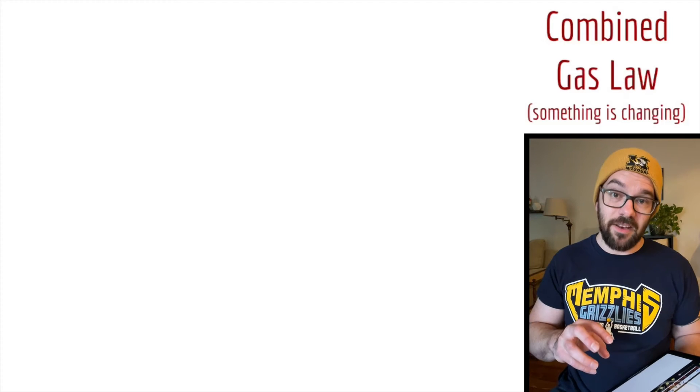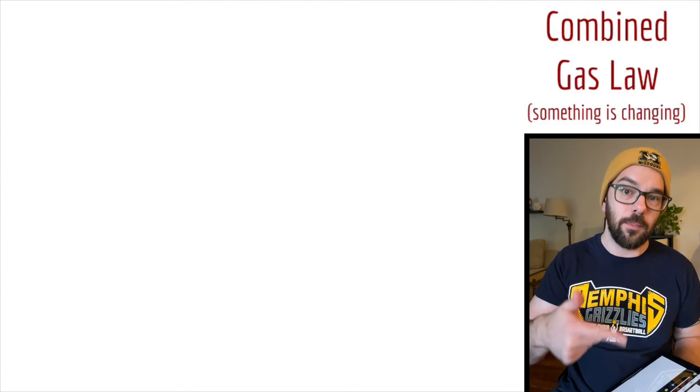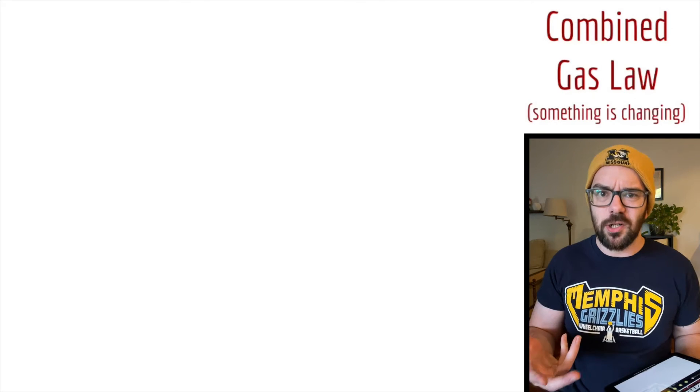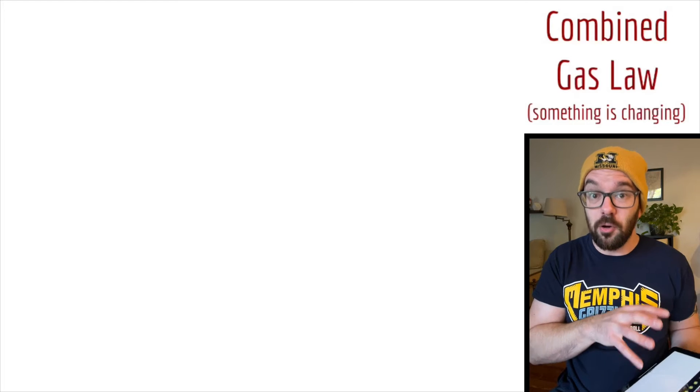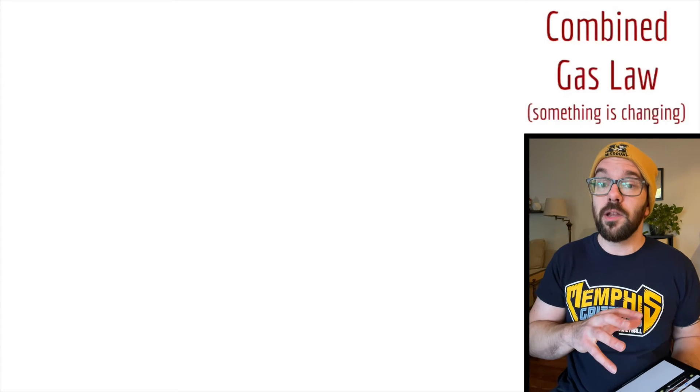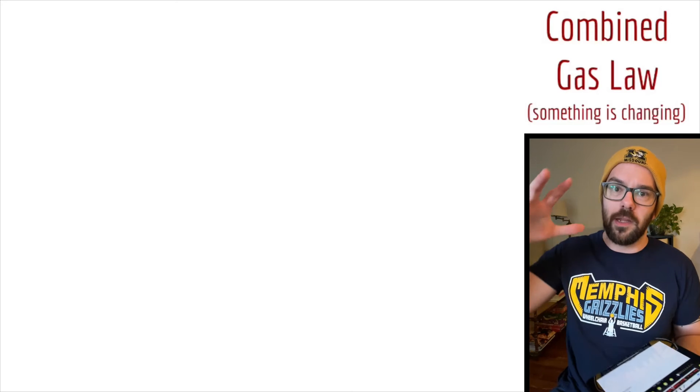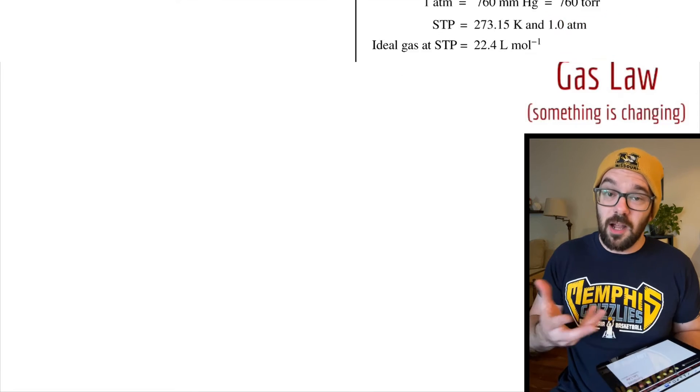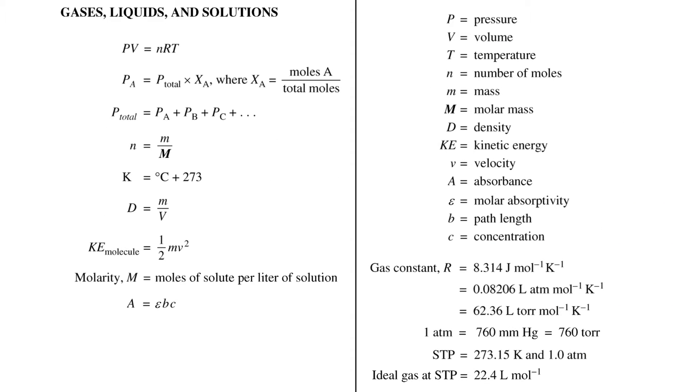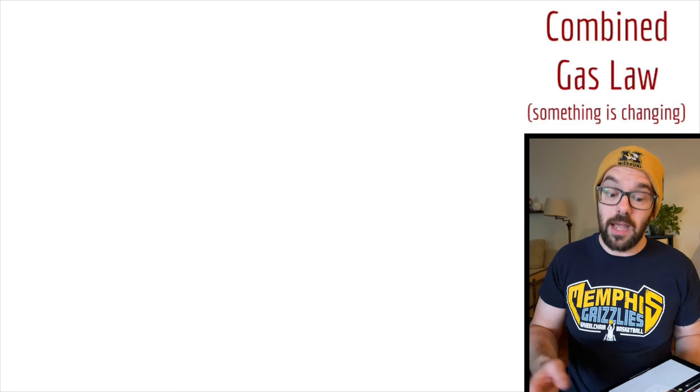Now let's take a look at something called the combined gas law, which is for when you have something changing. So maybe you've got a gas at a certain pressure, temperature, volume, but you're going to change it. You're going to heat it up maybe, so your pressure's increasing while some other variable is going to change. This is what you can use to figure out how do those other variables change whenever you heat something or compress a gas into a smaller volume or something like that. For AP chemistry, this combined gas law isn't provided on the equation sheet. So I'm going to show you how to quickly derive that from the ideal gas law.